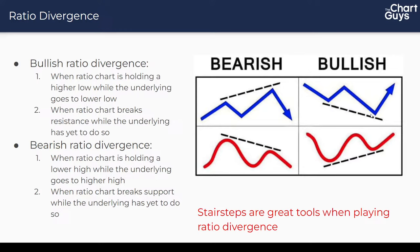This can be illustrated with a bullish divergence diagram — the ratio chart holding the higher low and the chart you're playing going to the lower low. You could have a situation where the underlying pulls all the way down and is still holding a higher low on the ratio, but if the chart you're playing plummets in the meantime, you're probably not going to make money on the trade. We've got to be tight with the risk when trying for these divergences.